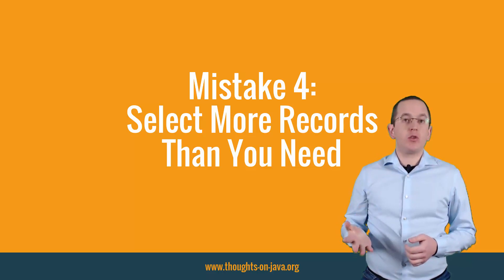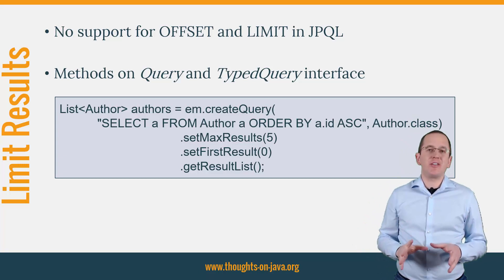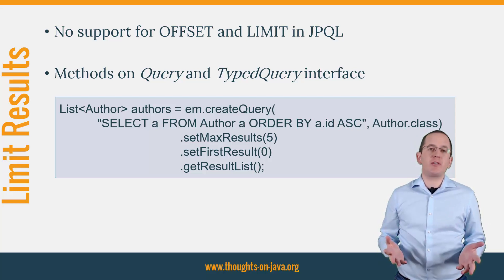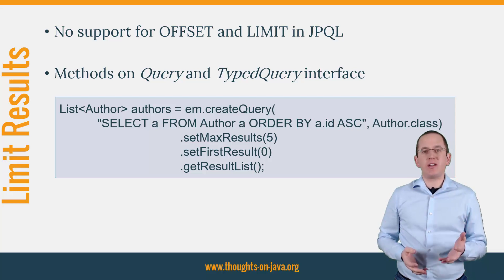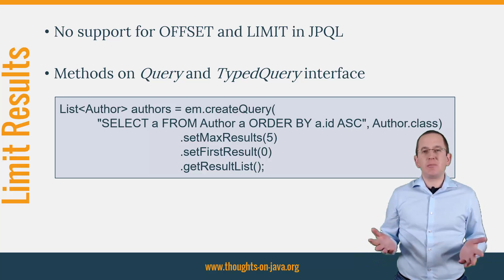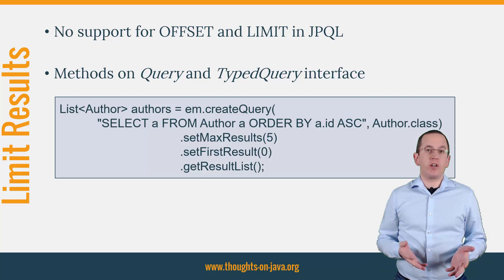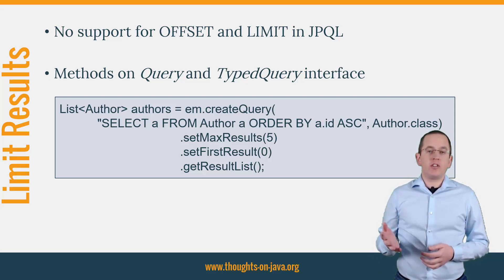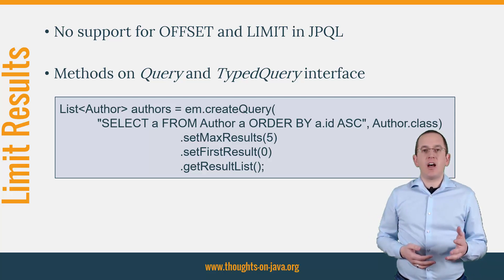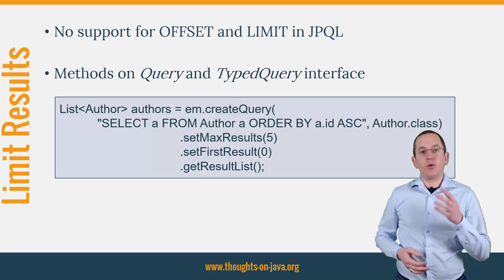Mistake number 4: Select more records than you need. Selecting too many records slows down your application. One of the reasons might be that JPQL doesn't support the offset and limit keywords you use in your SQL query, so it might seem like you can't limit the number of records retrieved. But you can — you just need to set this information on the query and TypeQuery interface and not in the JPQL statement. You can order the selected author entities by their ID and then tell Hibernate to retrieve the first 5 entities.